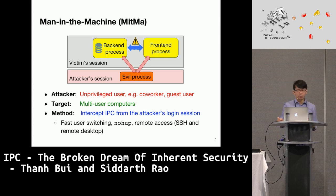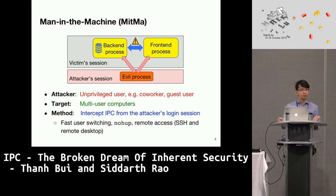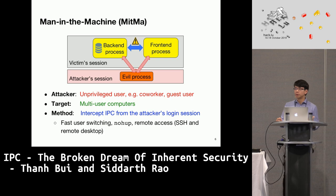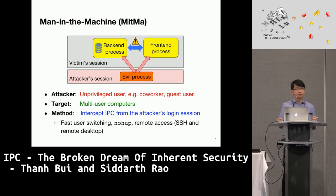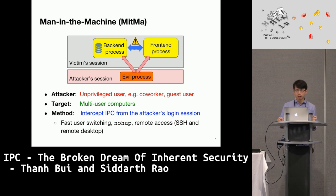How does the Man-in-the-Machine attacker attack other users on the same computer? The attack method is to run a malicious process from the attacker's login session. The attacker signs into the victim's computer with his own credentials and runs the evil process, then uses fast user switching on Windows to leave the login session in the background. The evil process continues running and tries to exploit the IPC of the victim. On macOS and Linux it's even easier, as a process can be kept running without leaving the login session in the background. Things could be worse if remote access such as SSH or Windows Remote Desktop is enabled, allowing the attacker to run the evil process remotely.